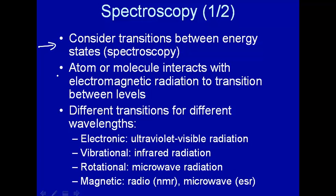Spectroscopy occurs — you get those transitions between energy levels — because an atom or molecule interacts with electromagnetic radiation to transition between energy levels. Electromagnetic radiation is light. You can think of it in terms of a wave. Light could be a wave or light could be photons. For this, we're going to consider light as being a wave.